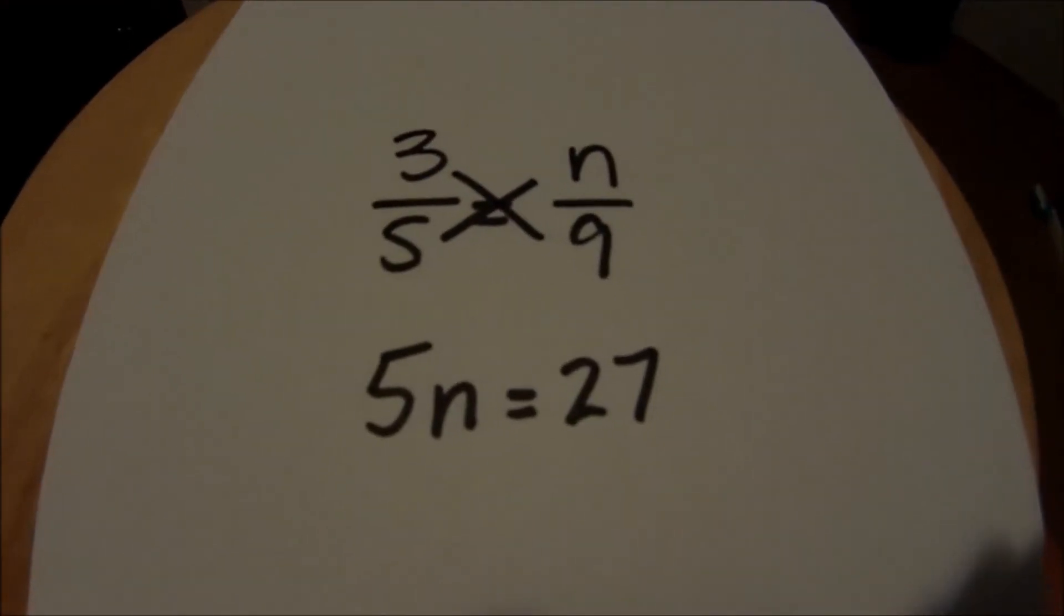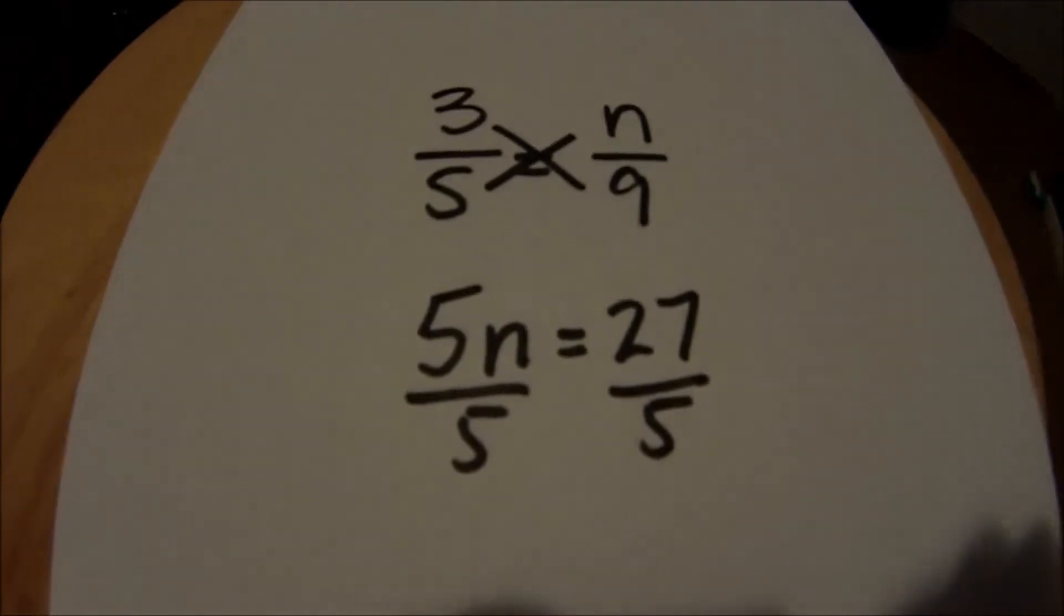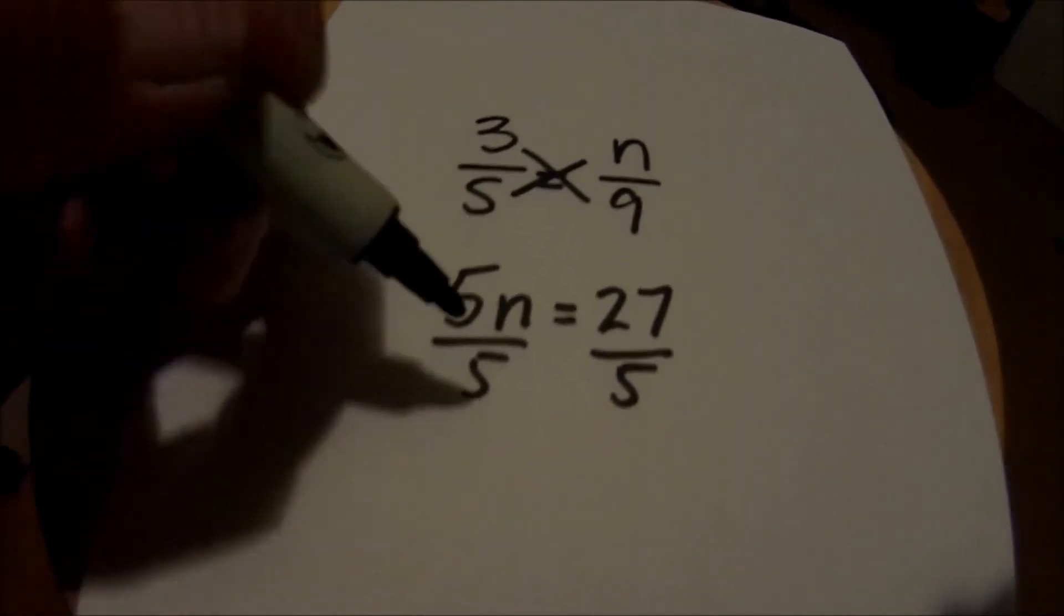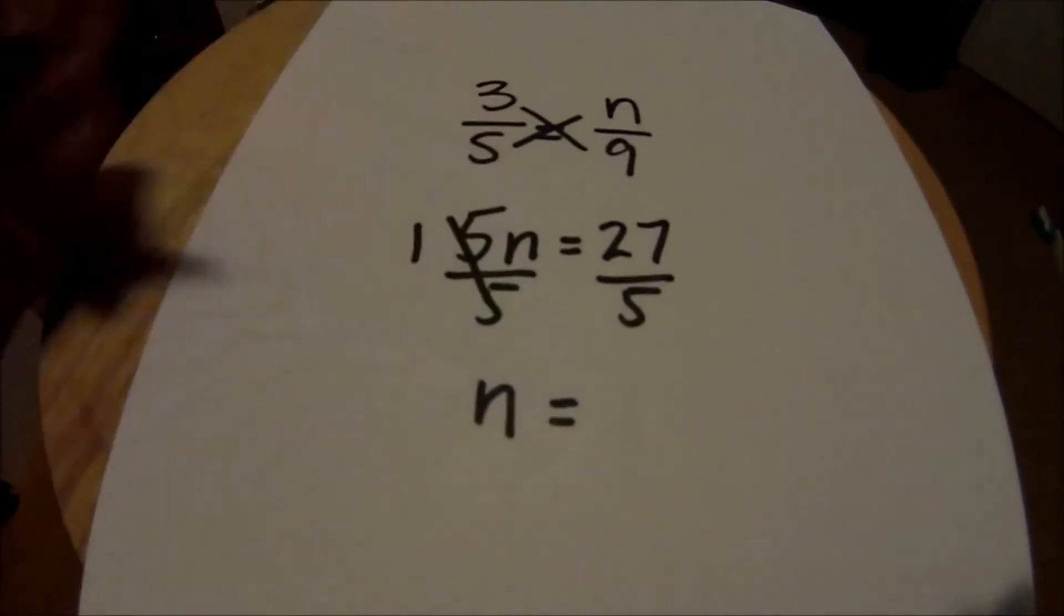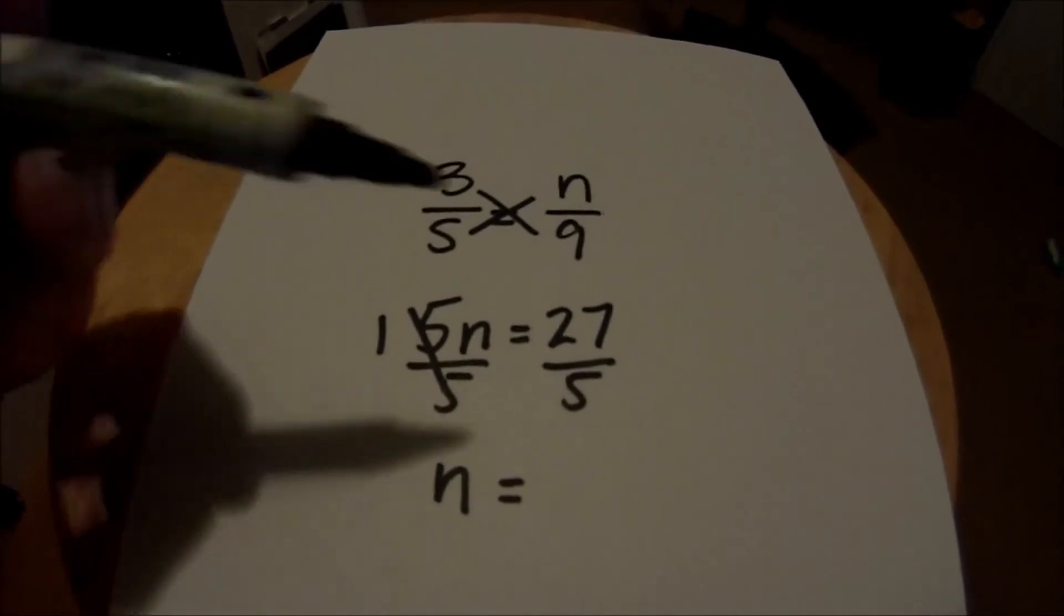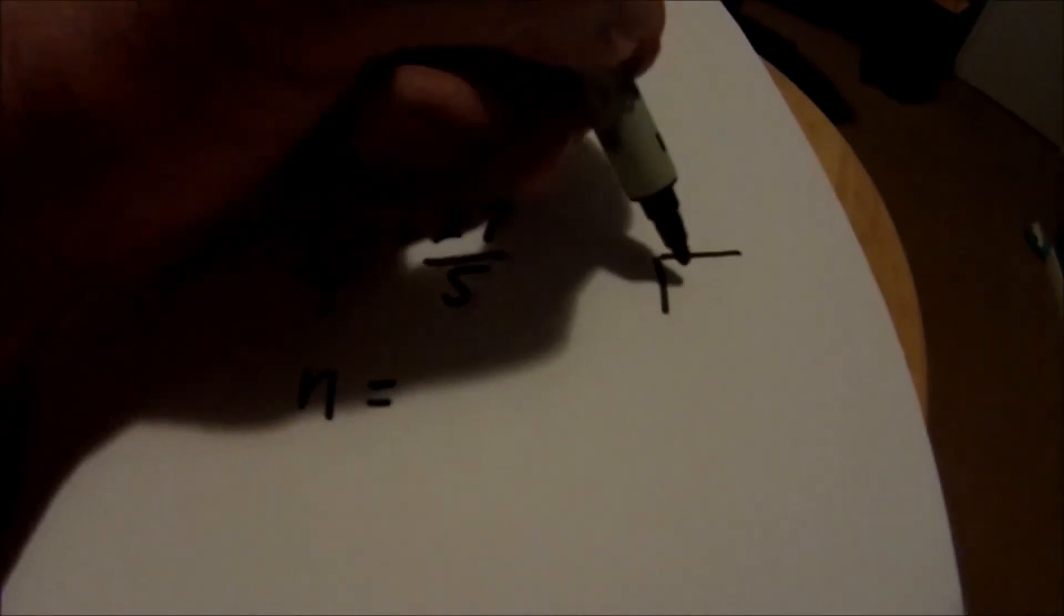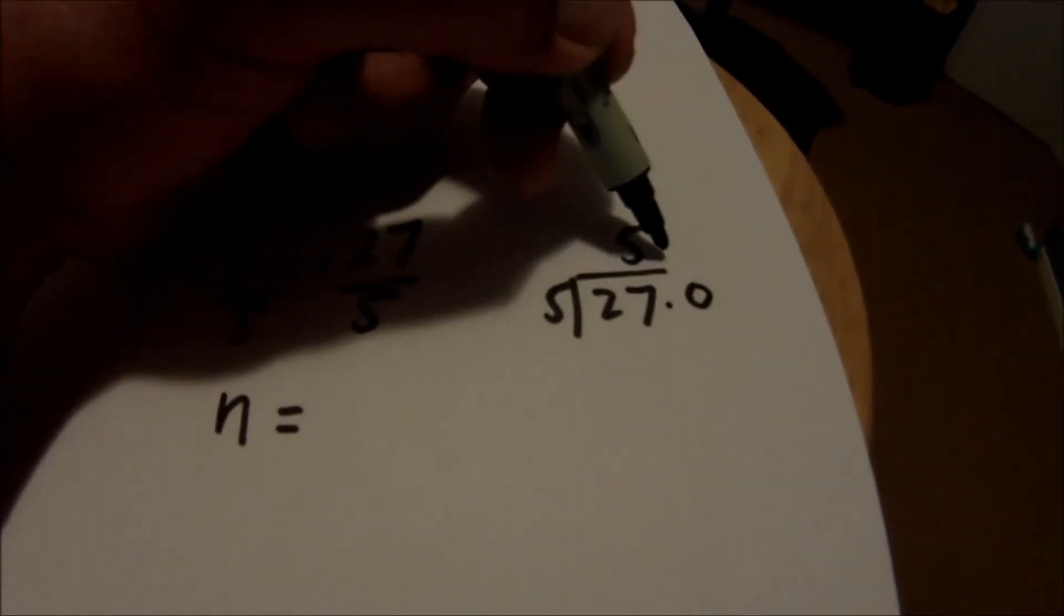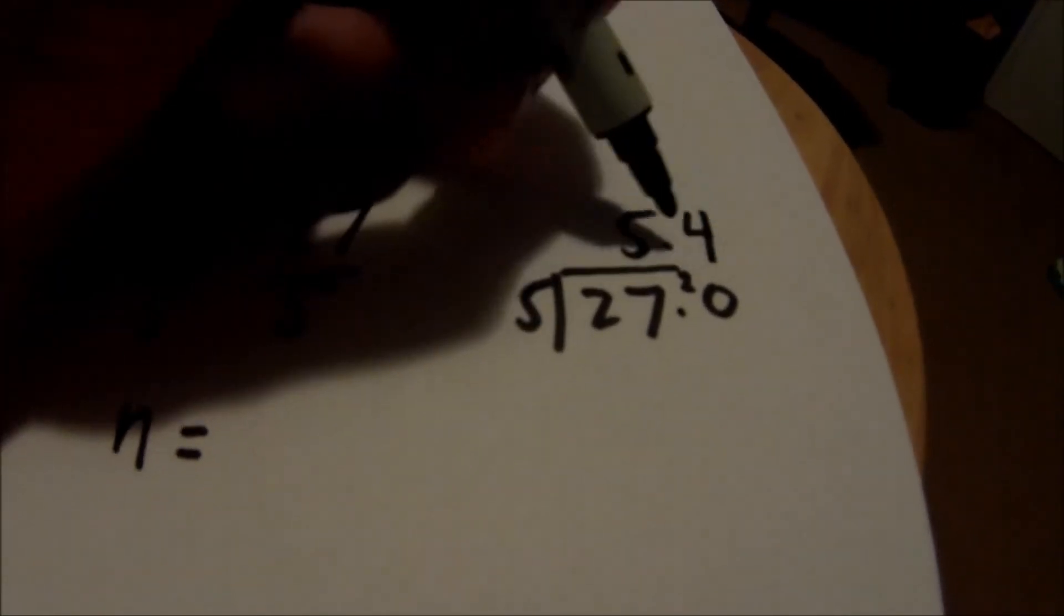And then basically what we'll do is we'll just solve this like an equation. We'll just divide both sides by 5. And then 5 into 5 basically is 1, it kind of cancels out so it just leaves n alone. And then the answer will be 27 divided by 5 which is 5 remainder 2, 5 into 20 is 4.